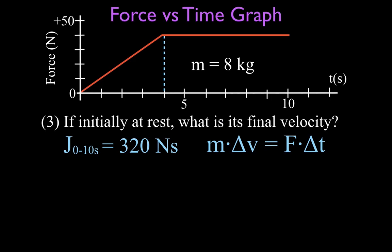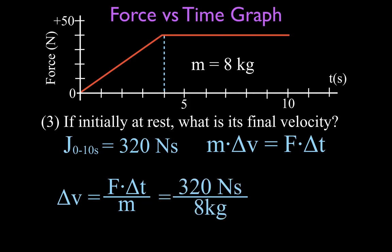Now we can calculate the final velocity if the object was initially at rest. The impulse was 320 and the change in momentum was 320. The equation is mass times change in velocity equals the impulse. We know the impulse and we know the mass is 8 kilograms, so we divide both sides by the mass. The change in velocity equals the impulse divided by the mass: 320 divided by 8 gives us a change in velocity of 40 meters per second.